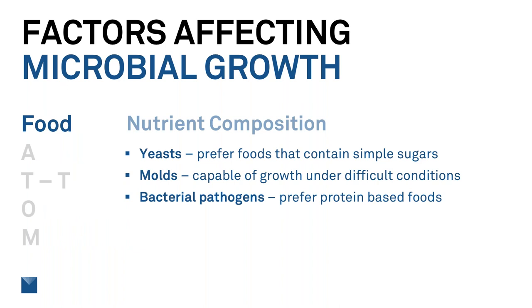First, with food, we have nutritional composition that each type of microbe needs. Yeast prefer foods that contain simple sugars — that's how we get nice bread, because the yeast eats the sugar. Molds are capable of growth under difficult conditions and have the lowest water activity limit. Bacterial pathogens prefer protein-based foods, which is why we see issues with peanut butter, milk, and meat.